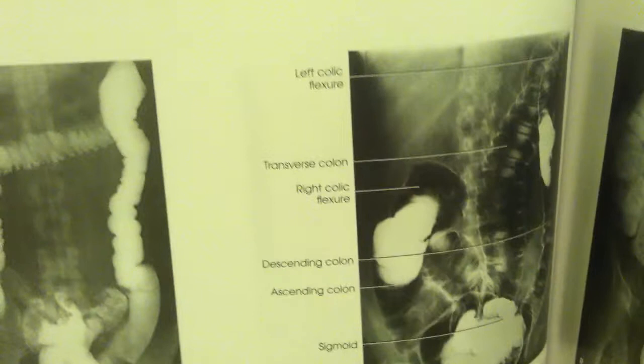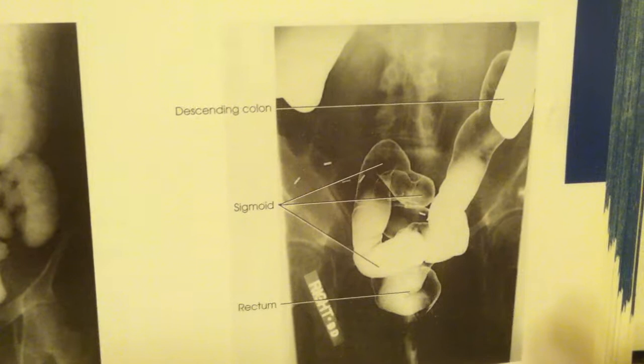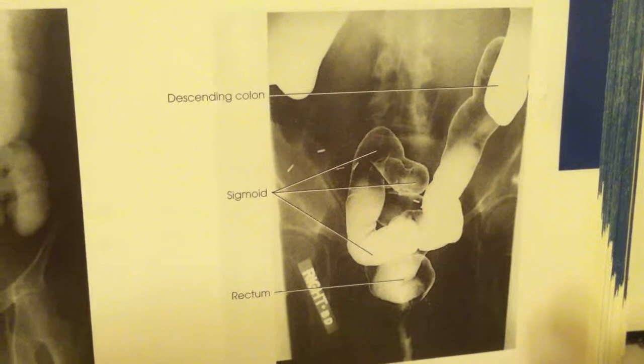The next image that I took was the AP axial, as shown here. The AP axial demonstrates the rectosigmoid area, showing the sigmoid as shown in this image.